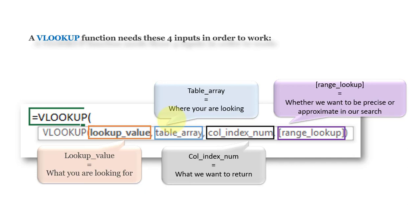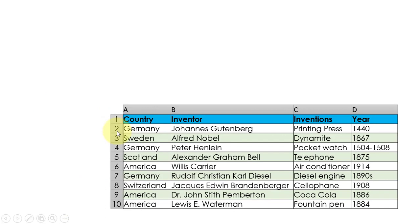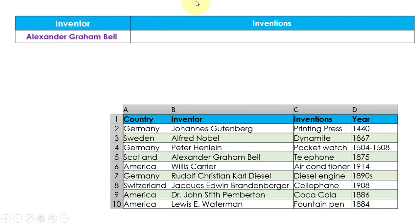Now let us understand this formula with an example and animation. Here you can see a table having four columns: country, inventor, invention, and year. This table has 10 rows including the column header and the range of this table is A1 to D10.